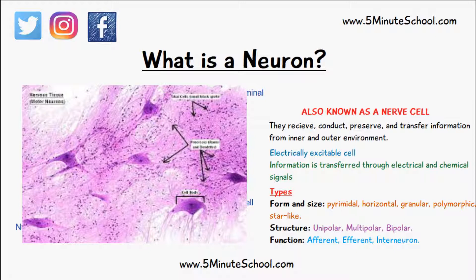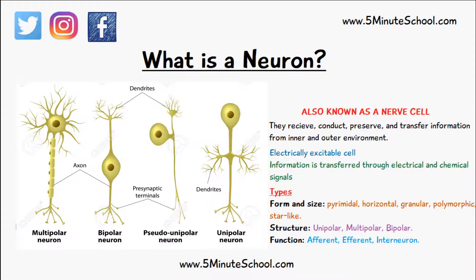When classifying neurons based on their structure, they can either be unipolar, multipolar or bipolar. Unipolar neurons are basically sensory and they just consist of the axon and the dendrite.